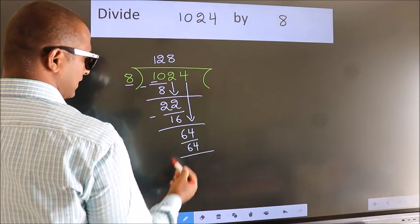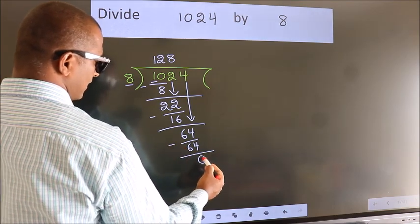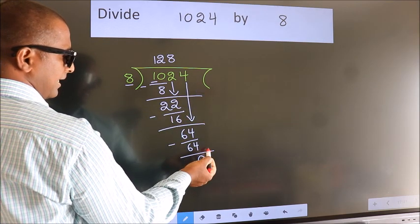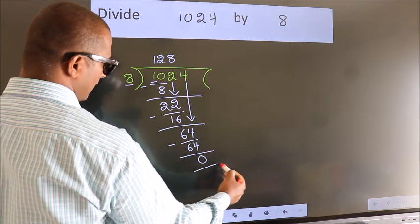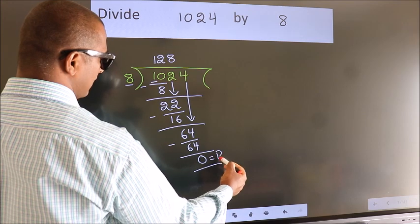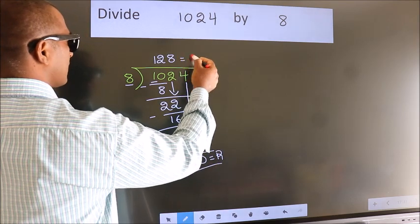Now we subtract. We get 0. No more numbers to bring down, so we stop here. This is our remainder. This is our quotient.